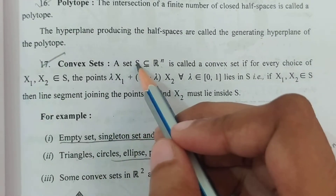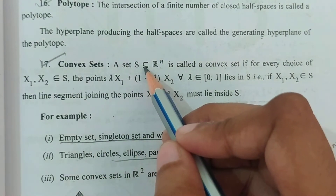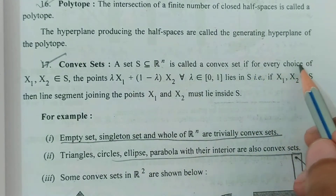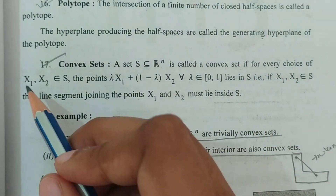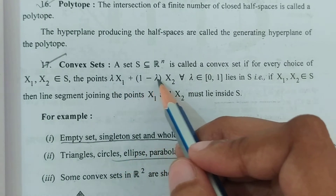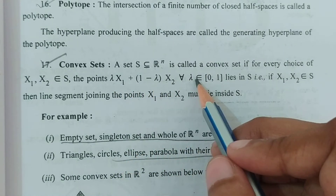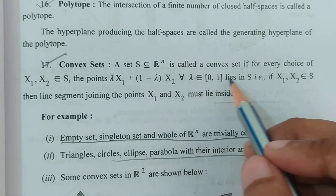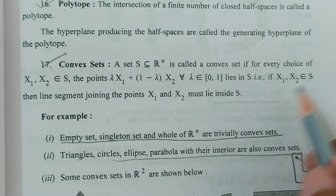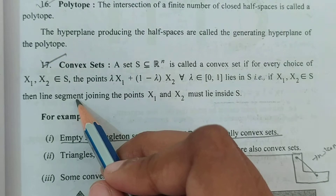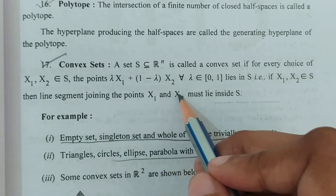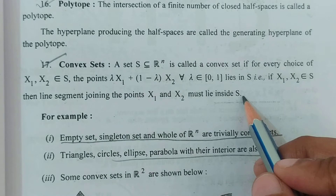Definition of convex set. A set S, as a subset of Rn, is called a convex set if for any choice of x1, x2 belonging to S, the point lambda*x1 + (1 - lambda)*x2 for all lambda belonging to [0,1] lies in S. That is, if x1, x2 belong to S, then the line segment joining the points x1 and x2 must lie inside S.